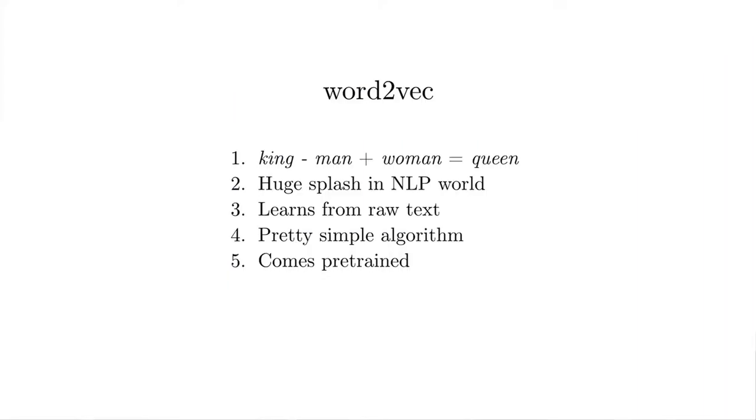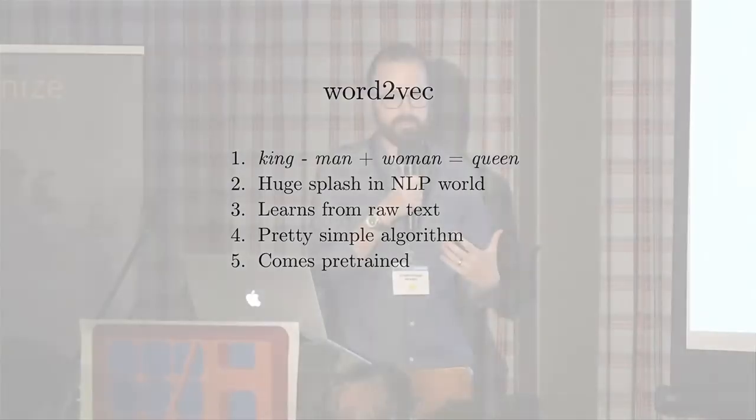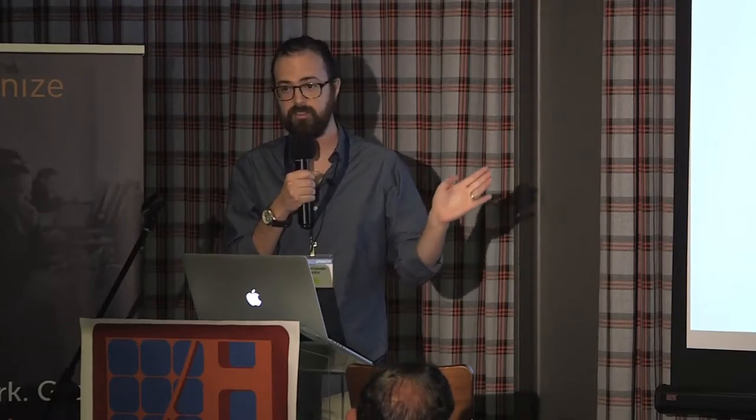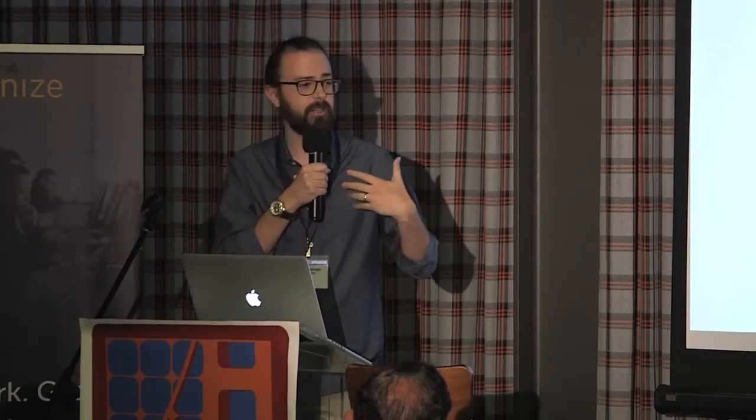So why do we even care about Word2Vec? There's going to be a lot of Word2Vec talks today, and I'm going to try to dive into the details of this algorithm and explain it as simply as possible. This example — king minus man plus woman equals queen — sort of blew open the whole NLP world, because you start to think that computers actually understand what words mean. It understands that the biggest difference between king and queen is the same as the difference between man and woman, namely gender. And how did it learn that? It just learned that from a bunch of raw text — not from some table, just by reading through Wikipedia. And I think that's awesome and really, really powerful.